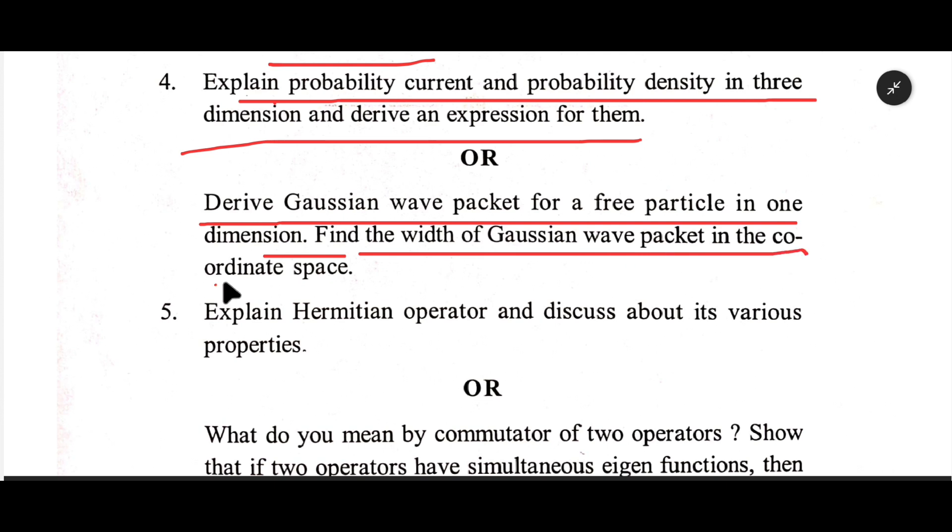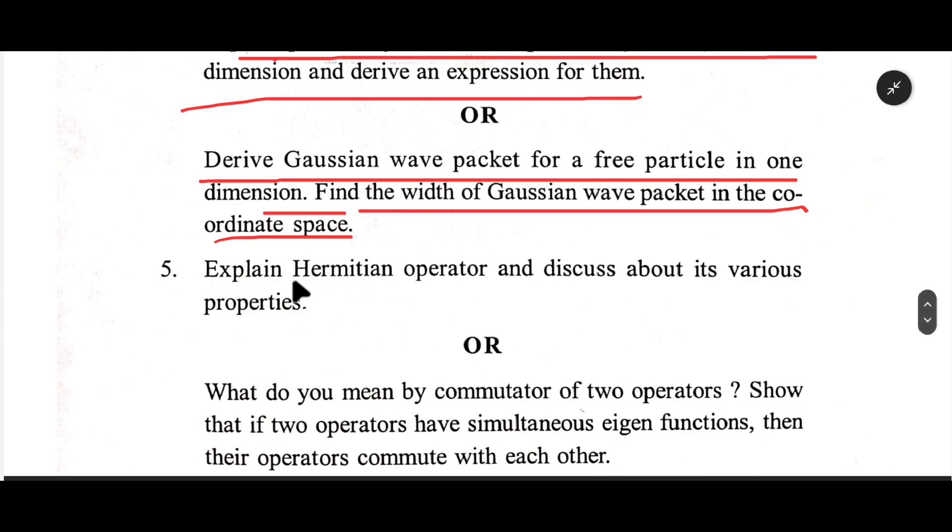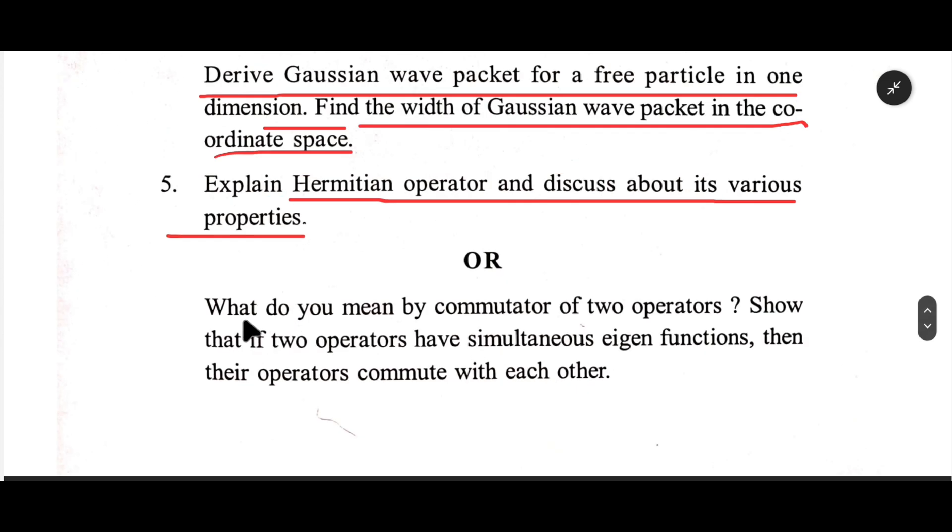c. Find the width of Gaussian wave packet in the co-ordinate space. d. Explain Hermitian operator and discuss about its various properties.